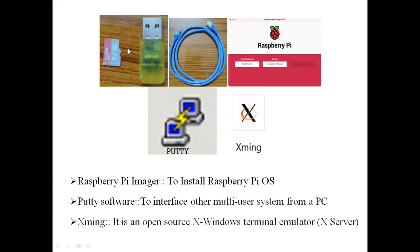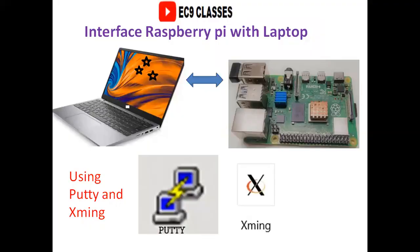First, take a new 16 GB memory card. With the help of a card reader, format the memory card. We also require one Ethernet cable — one end needs to connect to the Raspberry Pi and the other end needs to connect to our laptop.